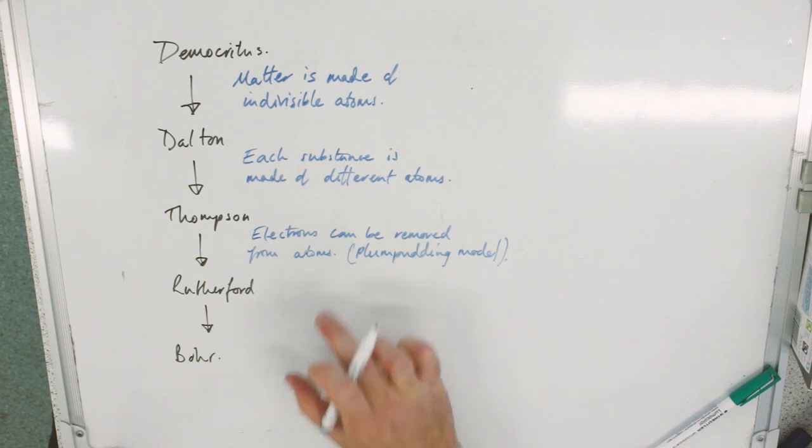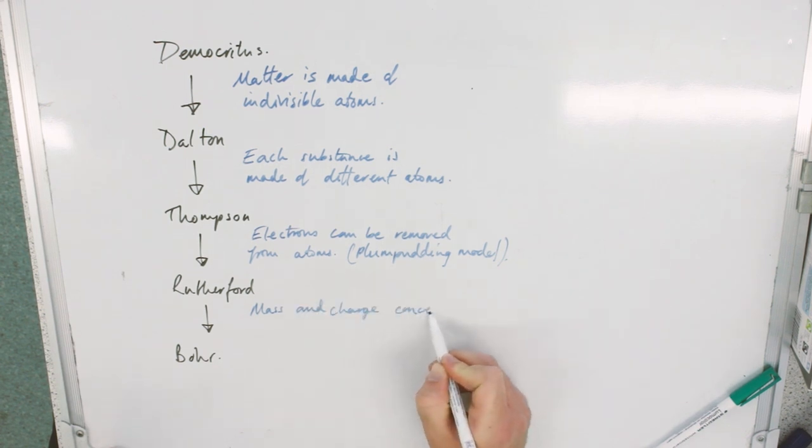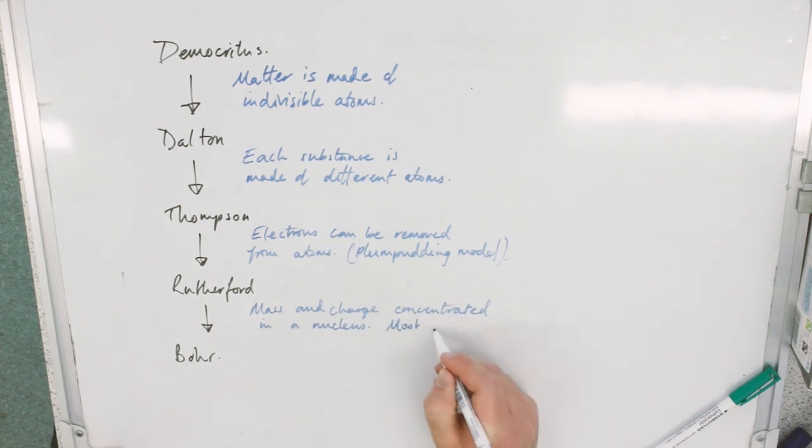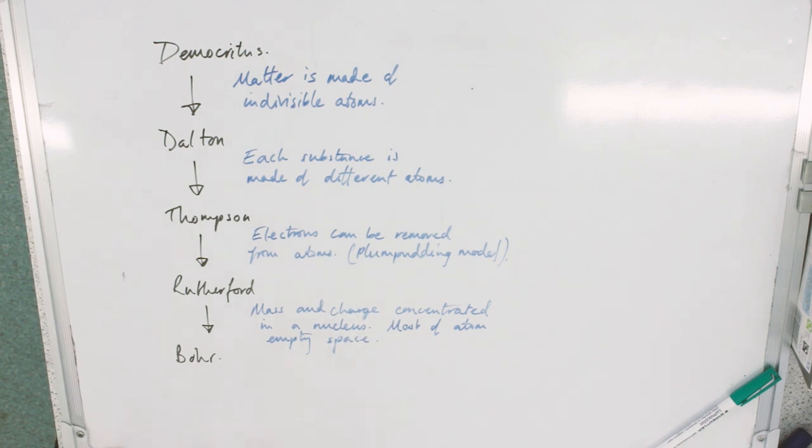This is the main bit. You're really going to need to focus on how Thomson's model became Rutherford's model. Rutherford's experiment led to mass and charge concentrated in a nucleus, mostly out of empty space. Niels Bohr's model is that electrons can only have fixed energy levels.